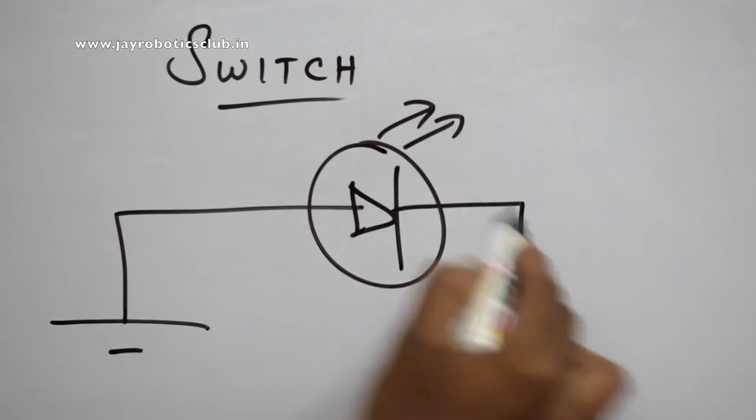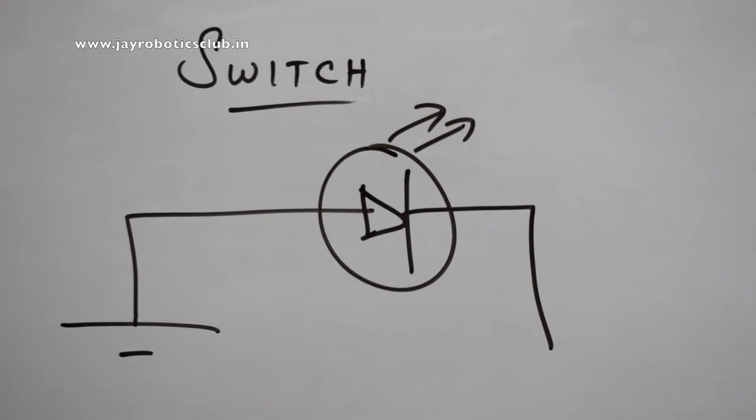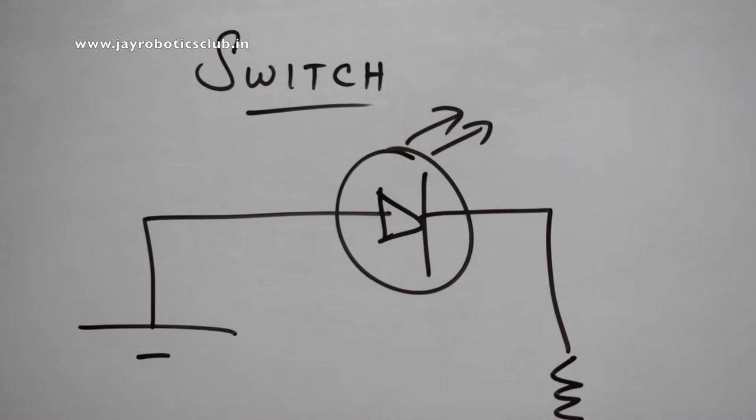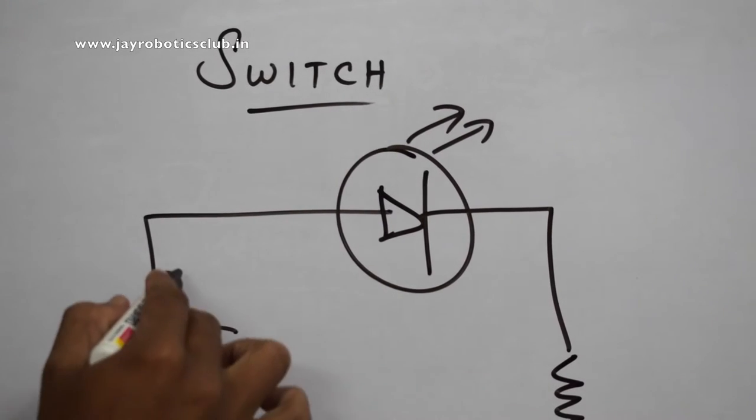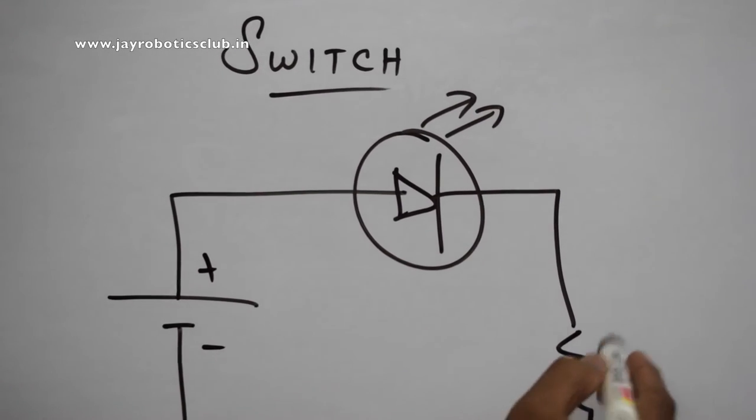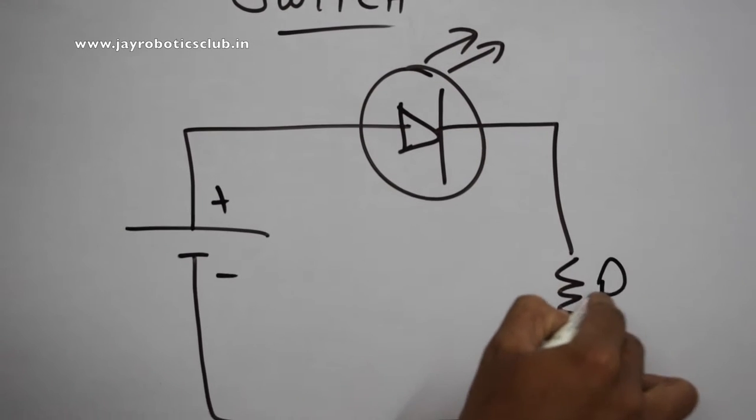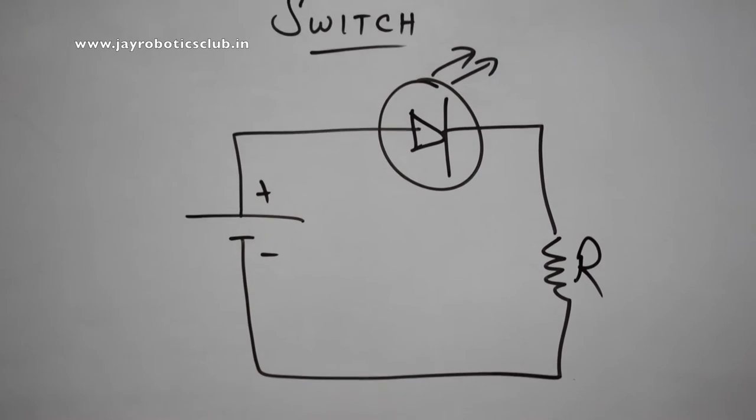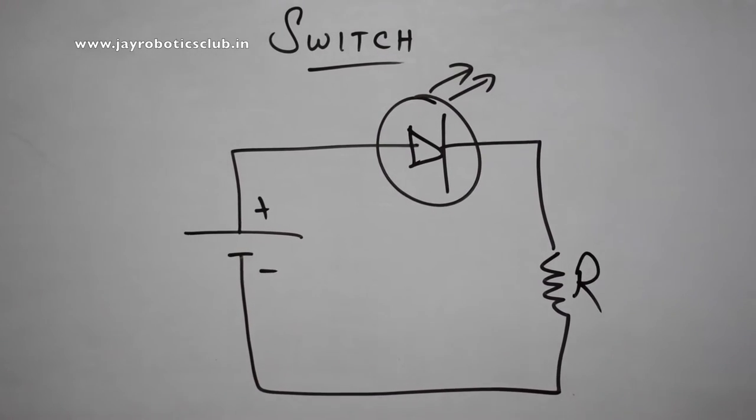a resistor. So, this is plus and minus and the resistor is of some value R. So, right now, the condition is the LED is glowing.